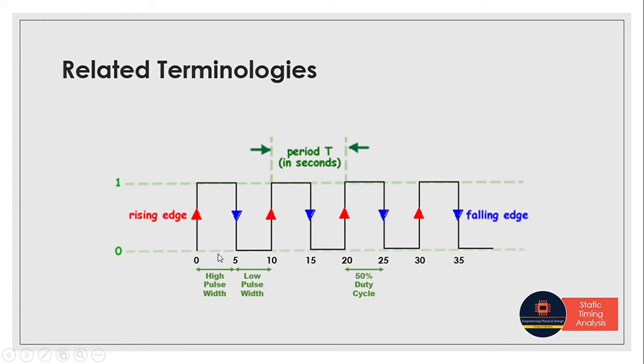Whenever the signal stays at high, we call it high pulse width. When the cycle stays low, it's low pulse width. If rise time and fall time are equal, we get 50% duty cycle. That's what we learned in the previous video.